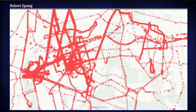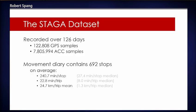We captured 126 consecutive days of movement through mostly urban but also rural environments, and this is an exemplary plot of the actual recorded GPS samples over that time period. The dataset contains over 120,000 GPS samples and over 7.8 million accelerometer samples. The movement diary captured at the same time includes 692 stops — that's mostly around 5.5 stops per day.